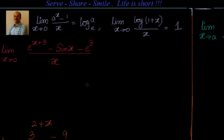We have three examples which we will try to solve. The first one: limit x tends to 0 of e^(x+3) minus sin x minus e³, divided by x. Once we look at the problem, we should be able to understand which formulas to use — here we need the formula related to e^x and also the formula related to sin x.